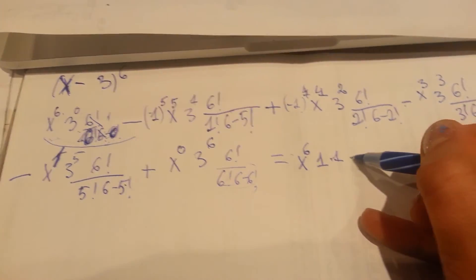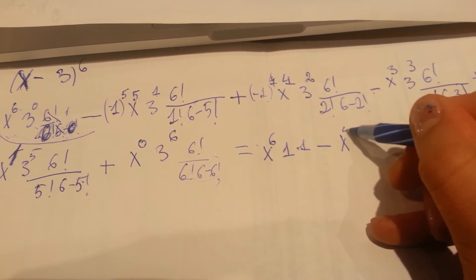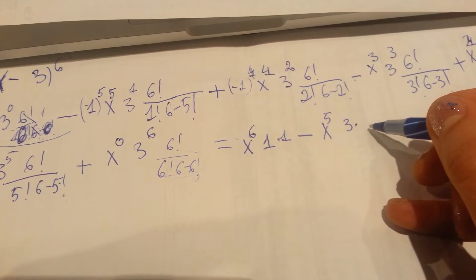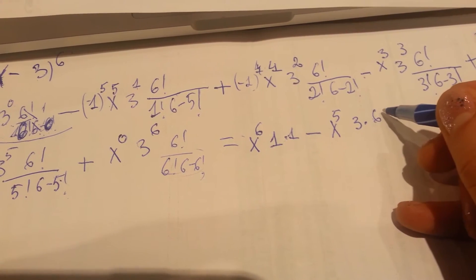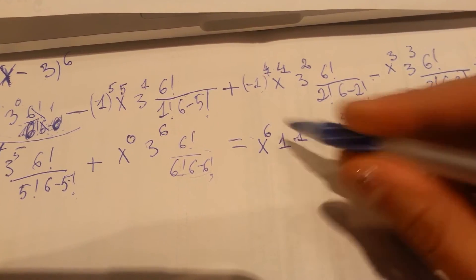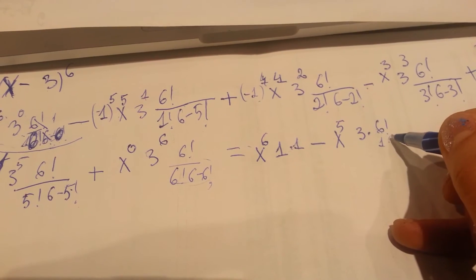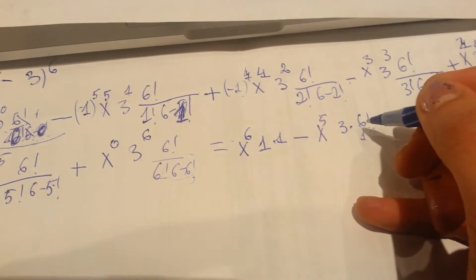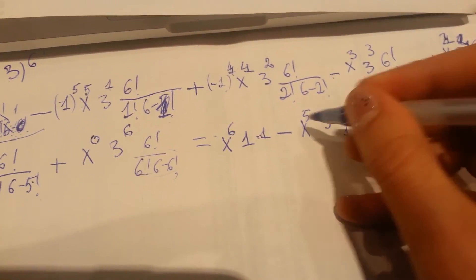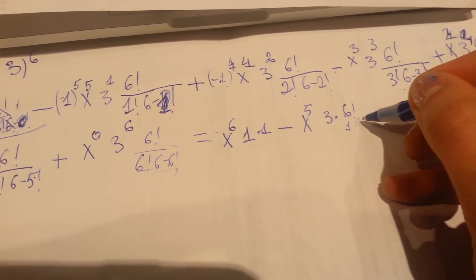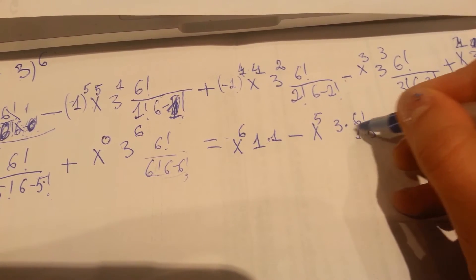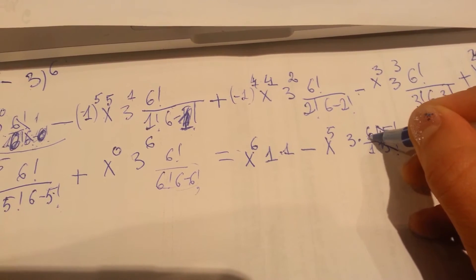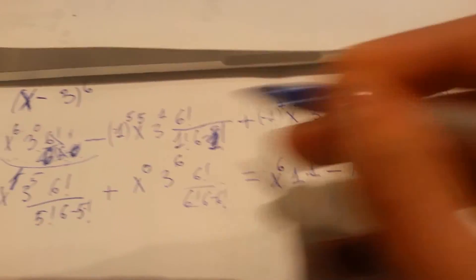So we get 1 times 1, and minus — it's 5 times 3. What I like to do, I like to rewrite. We got 1 right here. We get 5 right here, by 5 factorial — so 6 times 5. Okay, so we get 6 right here. Moving on to this one: plus x to the 4th, 3 to the 2nd degree is going to be 9, times 6 factorial, then we got 2 factorial and 4 factorial. So we get times 5 times 4 factorial — this is 3 times 5, this is going to be 15 right here.